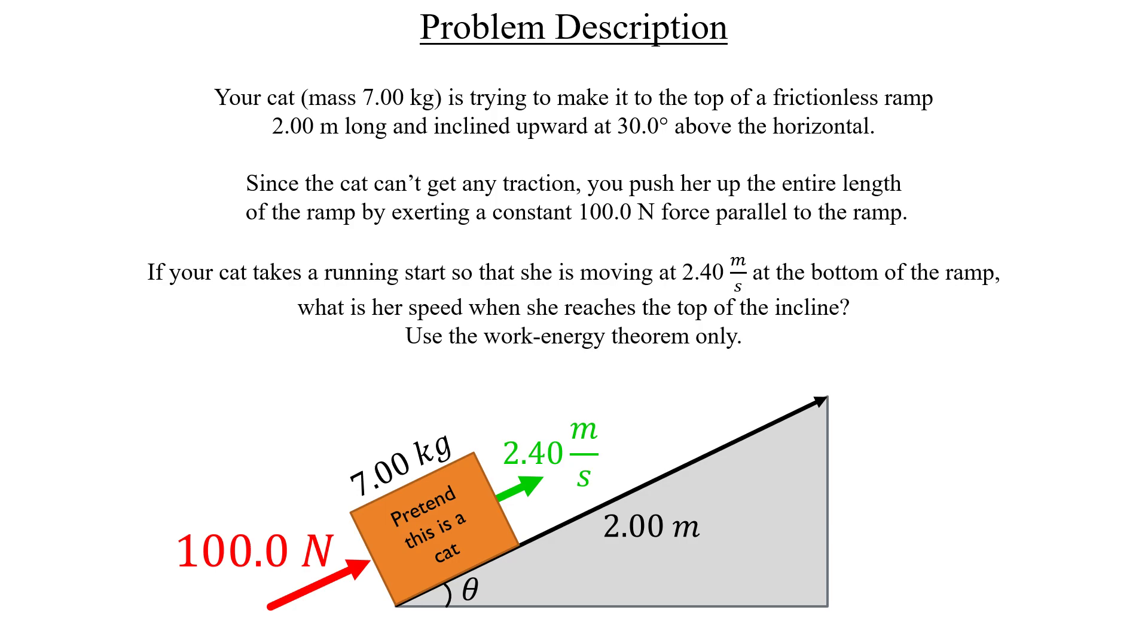Let's start by setting up a coordinate system that's parallel and perpendicular to the ramp, like this. We've seen in a couple problems like this already that forces perpendicular to the ramp, which would be the y-component of the cat's weight and the normal force of the ramp acting on the cat, those won't do any work here.